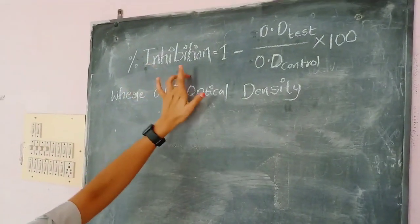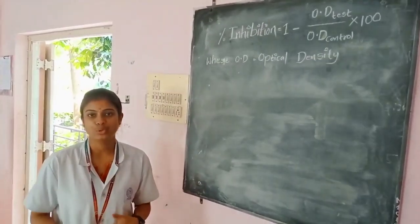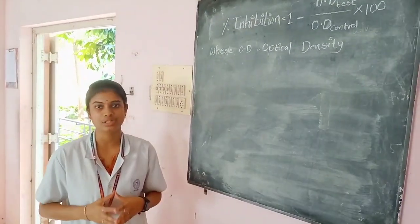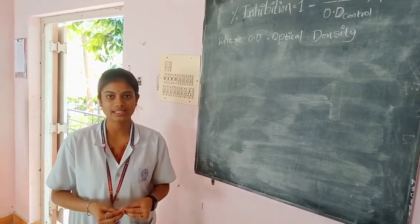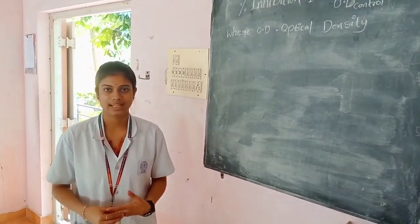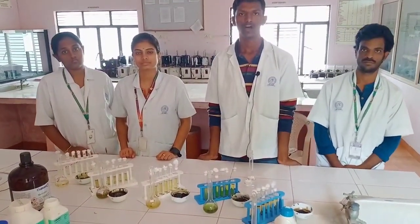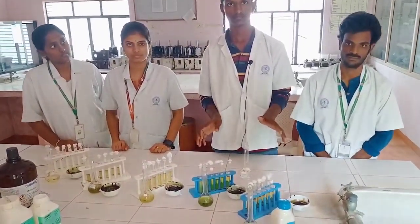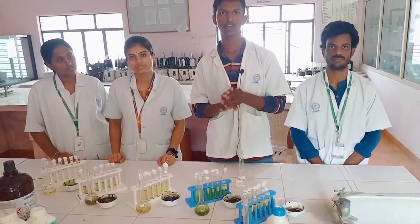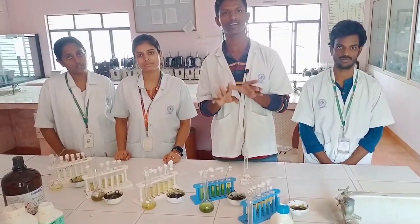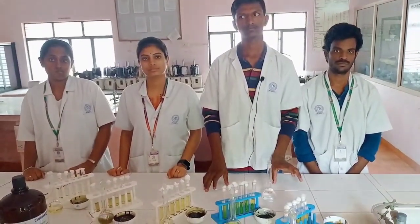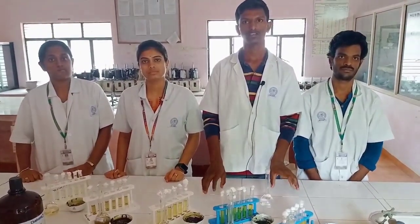By using the percentage inhibition formula, we calculated the percentage inhibition of 5 different medicinal plants by substituting the optical density values of all different concentrations. We came to know that among all 5 medicinal plants, only 3 showed the best percentage inhibition values. So we are going further for pre-clinical trials using these 3 medicinal plants. Based on the percentage inhibition of the 5 extracts, we concluded that only 3 are the best and selected them for pre-clinical trials. These natural medicinal plants are very cost-effective and easily available.